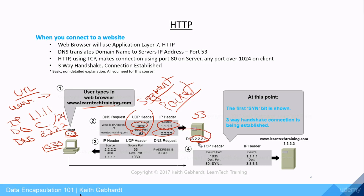The DNS server resolves learntechtraining.com to IP address 3.3.3.3 and sends it back. Notice how the source and destination ports flip — the DNS server is now the sending device, so source port becomes 53 and the destination port becomes port 1030, which was our computer's original port. Similarly, the source and destination IP addresses swap accordingly.